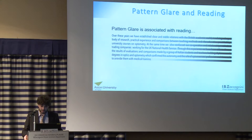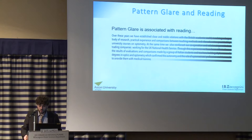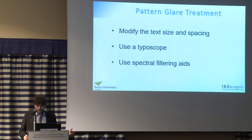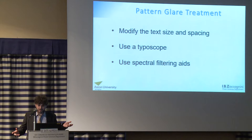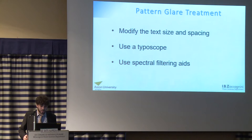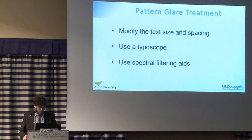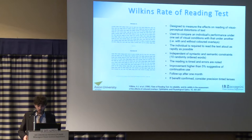What can we do for pattern glare sensitive people? We can modify text directly or indirectly using a computer or tablet — adjusting text spacing directly, or optically with a magnifier. A typoscope, as used in low vision patients, is another option. The treatment of choice for pattern glare is spectral filtering overlays. To select the best option, we use the Wilkins Rate of Reading Test, which is associated with pattern glare and is typically performed right after the pattern glare test.